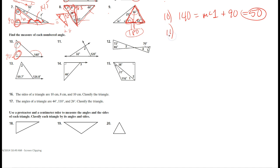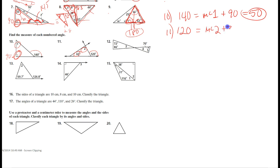Number eleven. Here's the exterior angle, here are the two remote interiors. The exterior angle equals the sum of the two remote interiors. Subtracting thirty-two from both sides, I'm left with eighty.